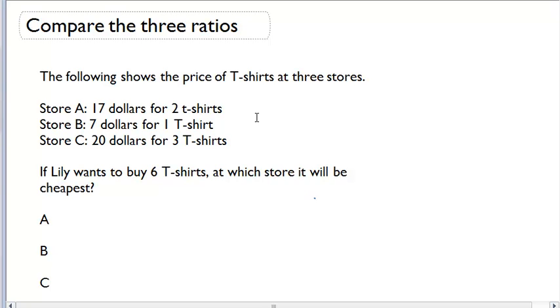This type of problem will allow you to figure that out. At Store A, you know that you could buy two t-shirts and spend seventeen dollars. Store B, you could buy one shirt and it's going to cost you seven bucks. Store C, you could buy three t-shirts and pay twenty bucks. Now Lily wants to buy six t-shirts. At which store will it be the cheapest?